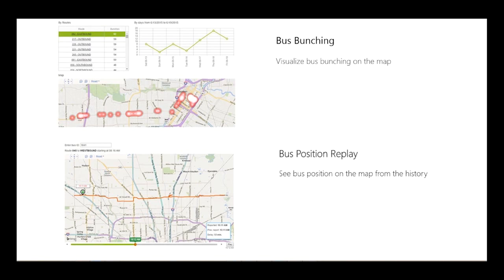Of course, you can drill down from pretty much every chart and see the history of a bus and replay it from a week ago — that's typically useful for customer service. When somebody calls and complains that the bus didn't arrive or skipped a bus stop, I can go look at what was happening one week ago. I don't need to go ask the driver and take his word — I can just check.